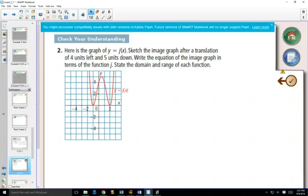We're given a graph of j of x. We want to sketch the image of the graph after translation 4 to the left and 5 down.